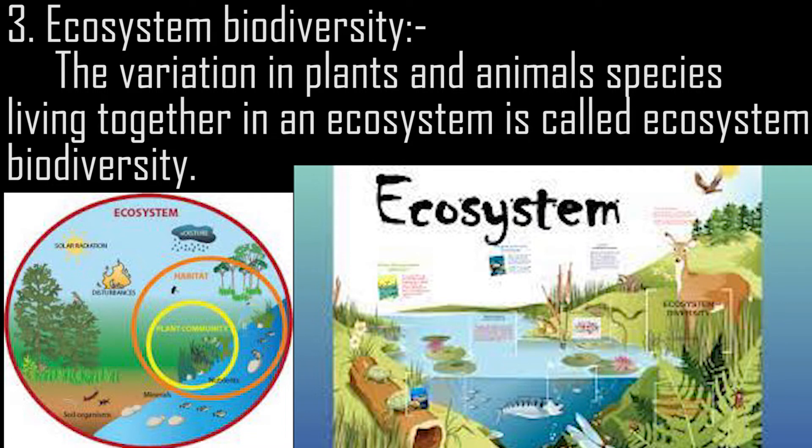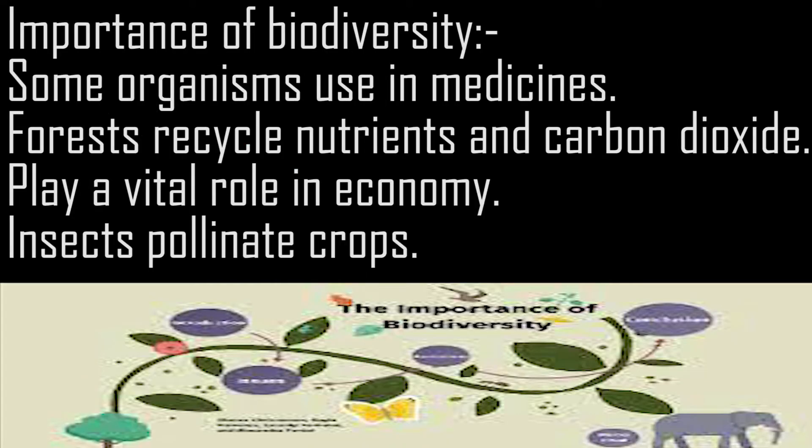3. Ecosystem biodiversity: the variation in plant and animal species living together in an ecosystem is called ecosystem biodiversity.